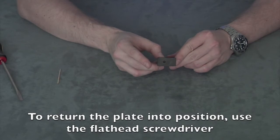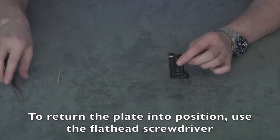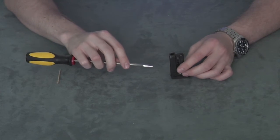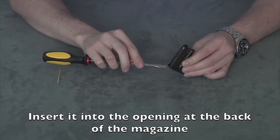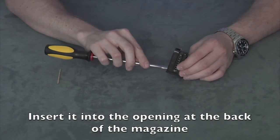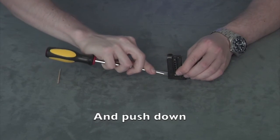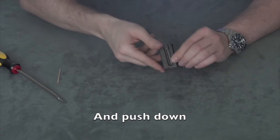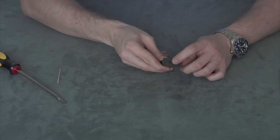As you see, the plate isn't in position. Use a flathead screwdriver to turn it into place. Insert it into the opening at the back of the magazine and push down. You will hear a click. Now it is in place.